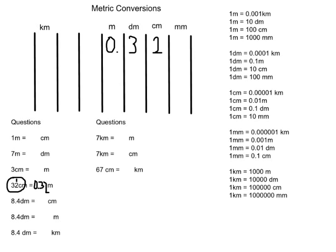Our next question is 8.4 decimeters — how many centimeters? We look at the base unit: there are 8 decimeters, so we place 8 in the decimeter column. Since it's a decimal number, the 4 goes in the centimeters column. We have not reached the milestone of 10 decimeters, so nothing carries into meters. When converting to centimeters, we're moving the decimal point one place to the right, so the decimal disappears and our answer is 84 centimeters.